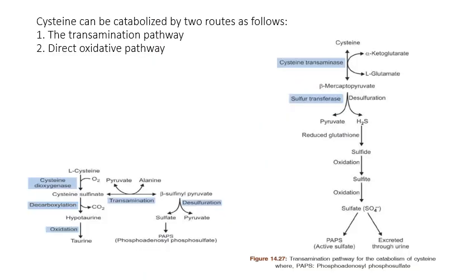The next part is the metabolism of cysteine and cystine. Previously we saw the synthesis of cysteine and cystine from methionine; now we discuss in detail the catabolism of cysteine. Cysteine is a nutritionally non-essential glucogenic amino acid, synthesized from methionine and serine. Cystine undergoes reduction to form cysteine, which is a reversible reaction. The major catabolic fate of cysteine is catalyzed by cysteine reductase. The catabolism of cysteine occurs by two routes: first, the transamination reaction; second, the direct oxidative pathway.